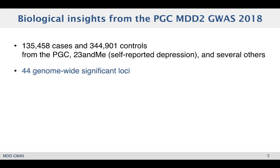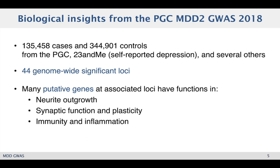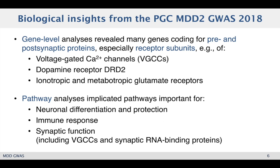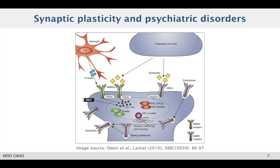As is always the case in GWAS, it's difficult to tell which genes the variants actually influence. But using positional overlap, many of the putative genes at associated loci have functions in neurite outgrowth, synaptic function and plasticity, and also immunity and inflammation. MAGMA-based gene-level and gene-set analyses found many genes coding for pre- and post-synaptic proteins, especially receptor subunits such as voltage-gated calcium channels, the dopamine receptor DRD2, and many different glutamate receptor subunits. Gene set analysis found pathways important for neuronal differentiation and protection, immune response, and mainly synaptic function — particularly post-synaptic plasticity, which plays a very important role in the development of depression and other common psychiatric disorders like schizophrenia.